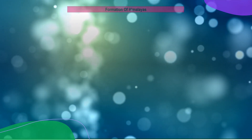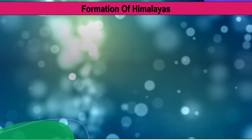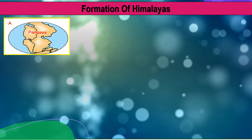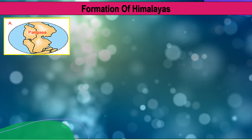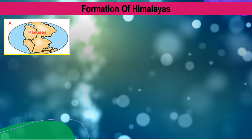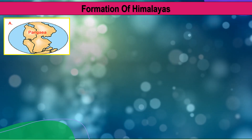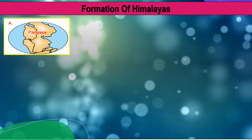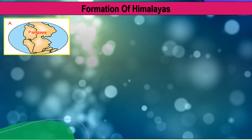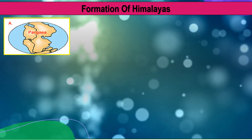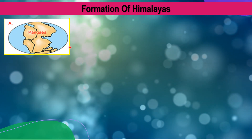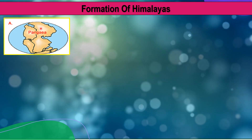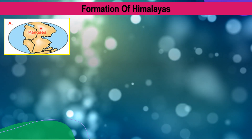The Himalayas act as a natural boundary separating India from a large part of Asia. The formation of Himalayas is very interesting. The continents are always moving — they are either sliding across each other or smashing into each other. Around 250 million years ago, all the continents were joined together into a large supercontinent called Pangaea, surrounded by a mega-ocean called Panthalassa. According to the Continental Rift Theory proposed by Alfred Wegener,